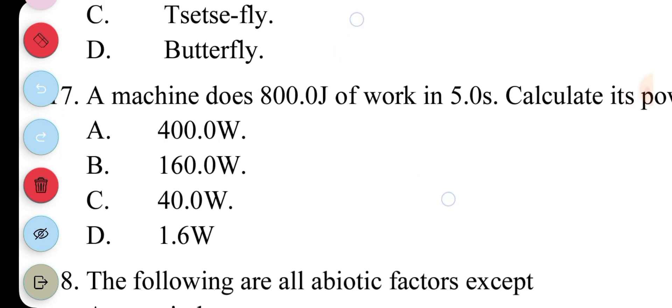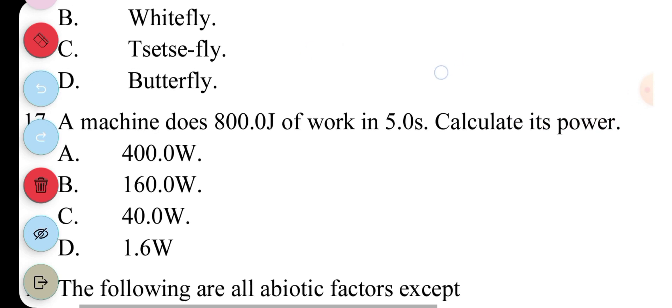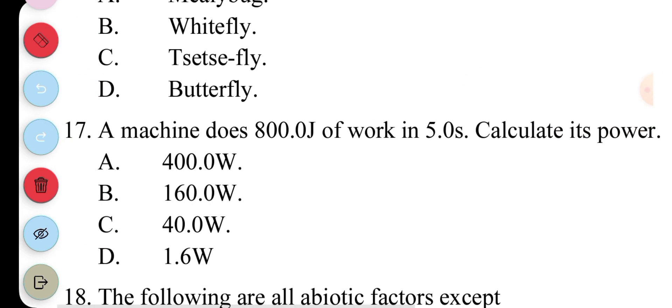17, the machine does 800 Joules of work in 5 seconds. Calculate its power. Now, power equals work done over time taken. The work done is 800 Joules. The time is 5 seconds. So, 800 Joules over 5. We're going to get 160. So the answer is 160 Watt. That's B.